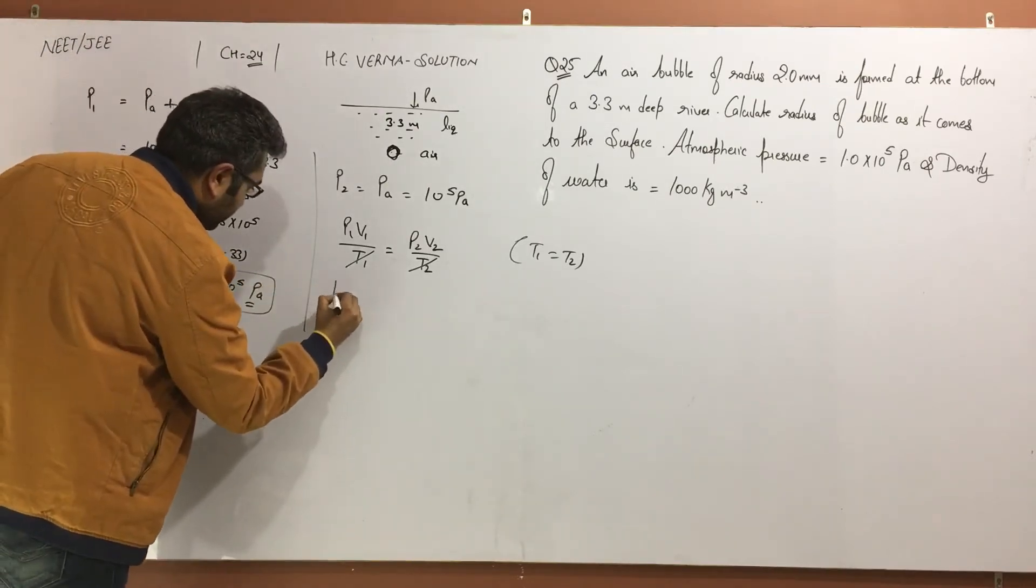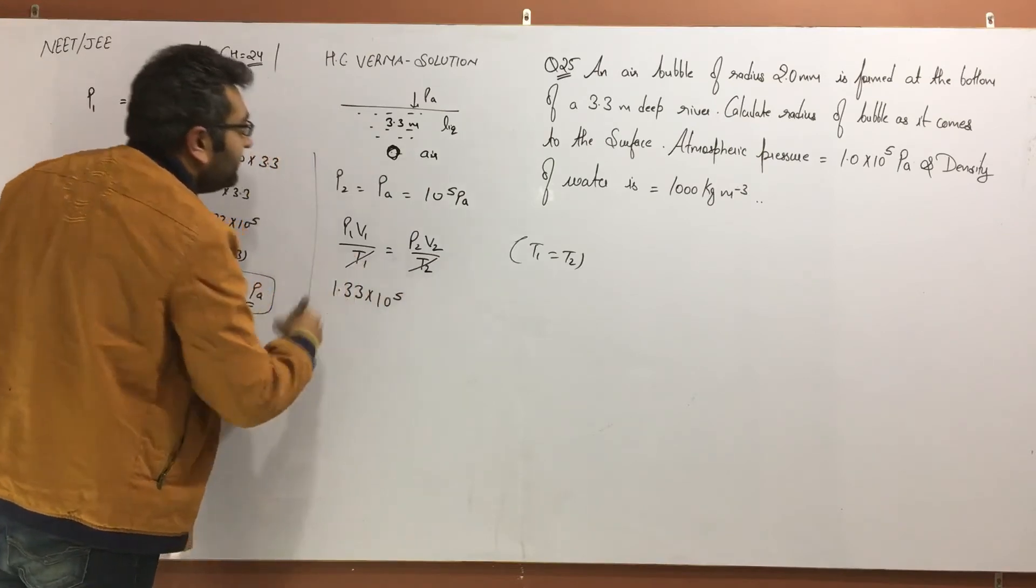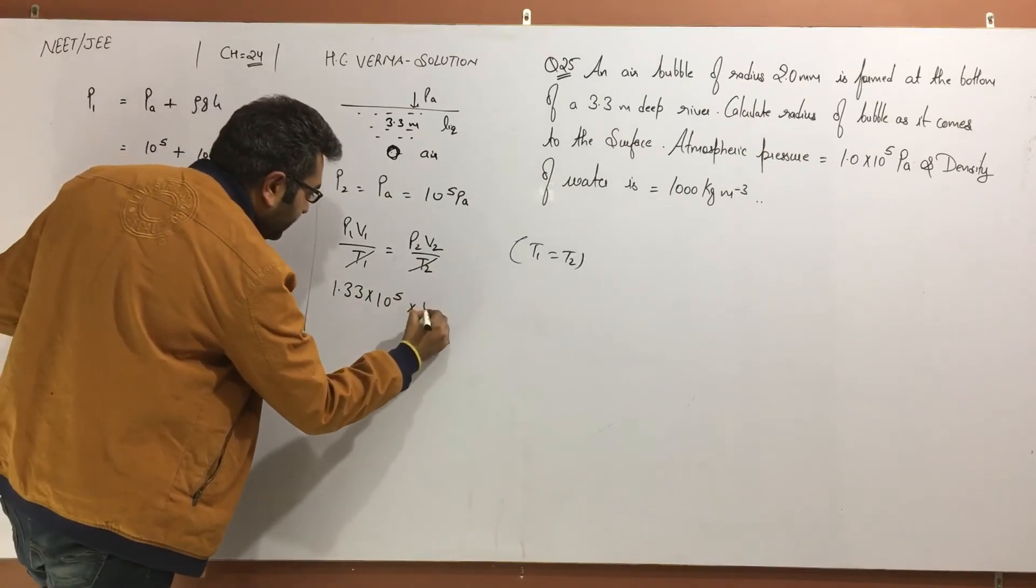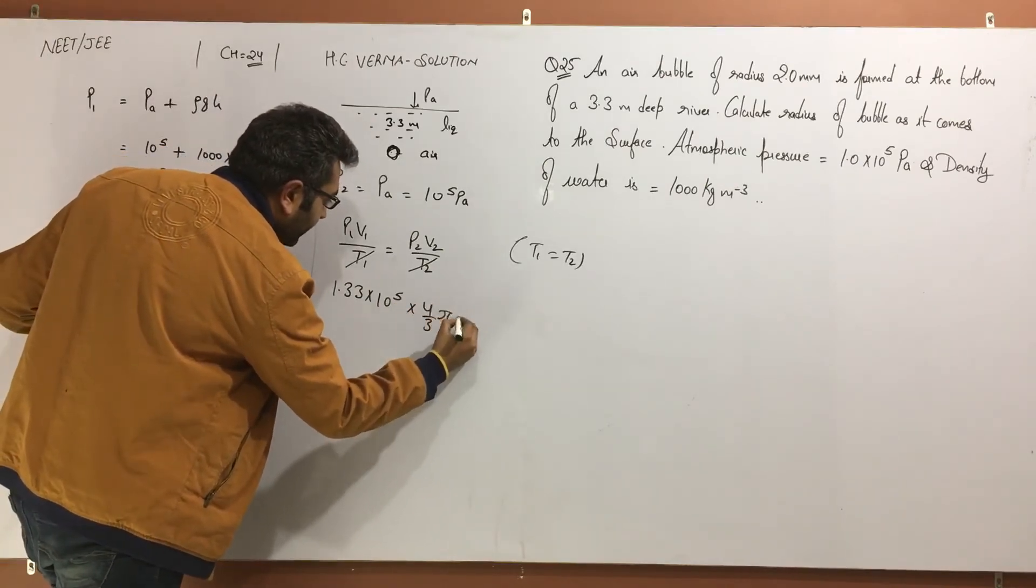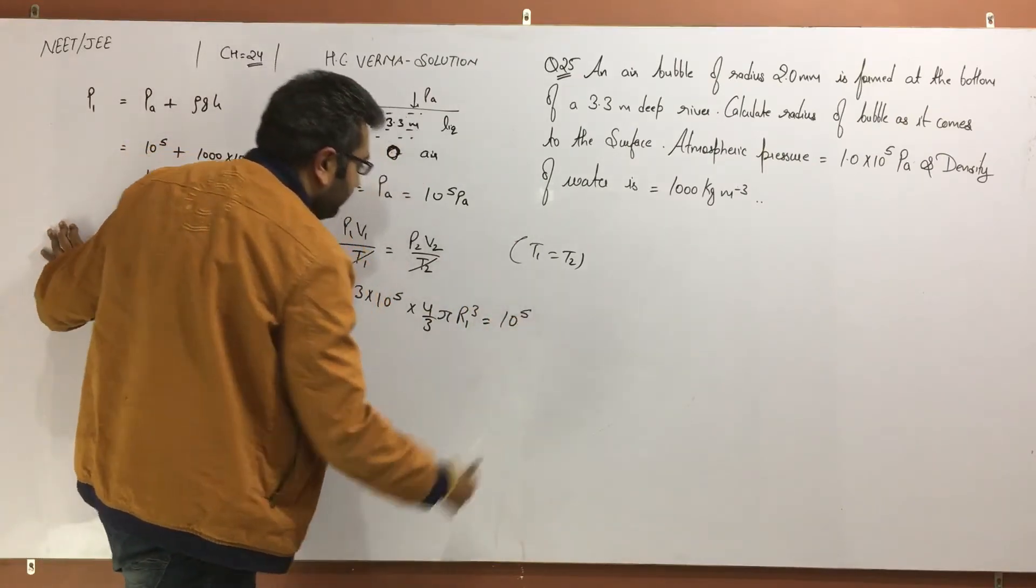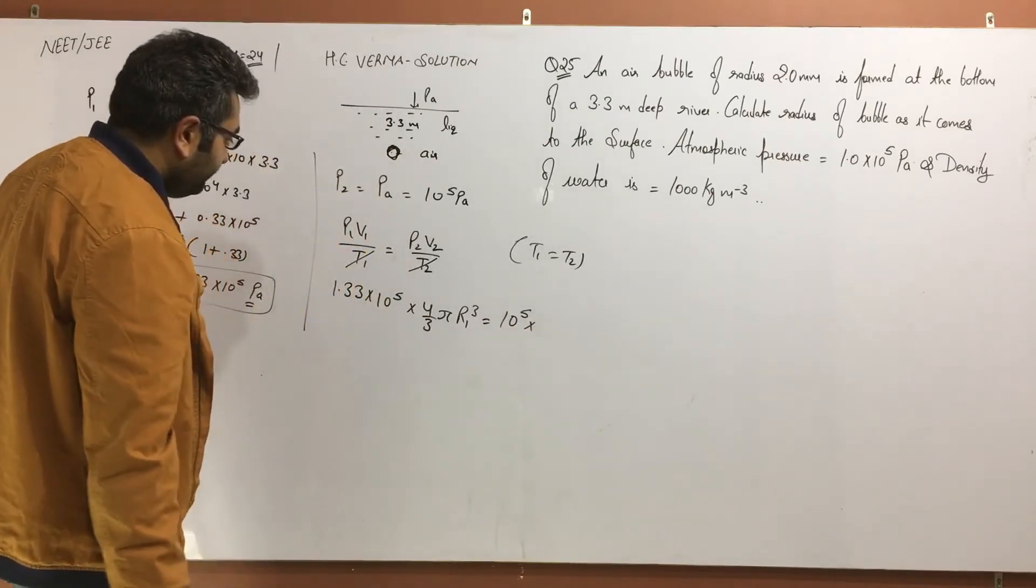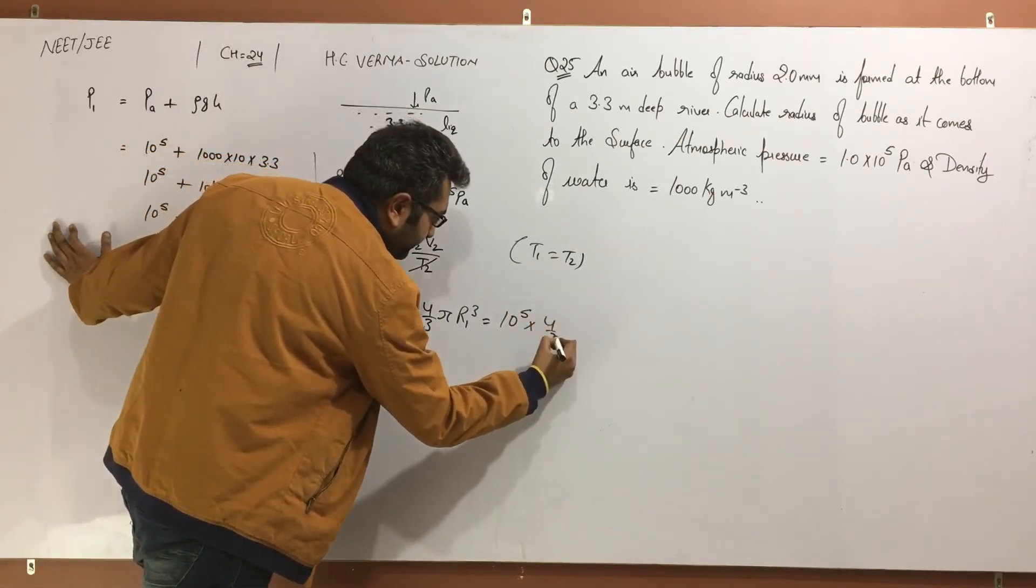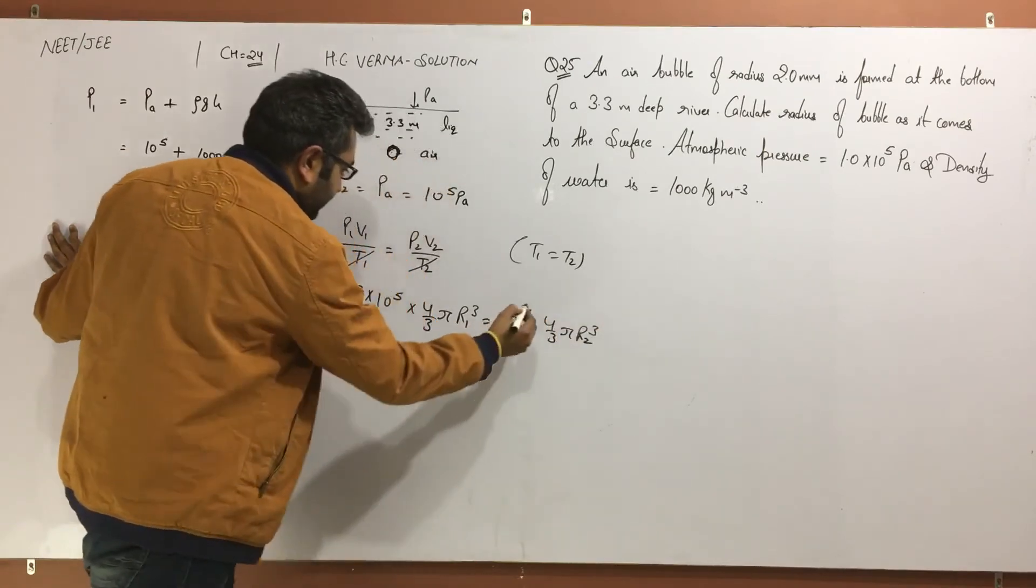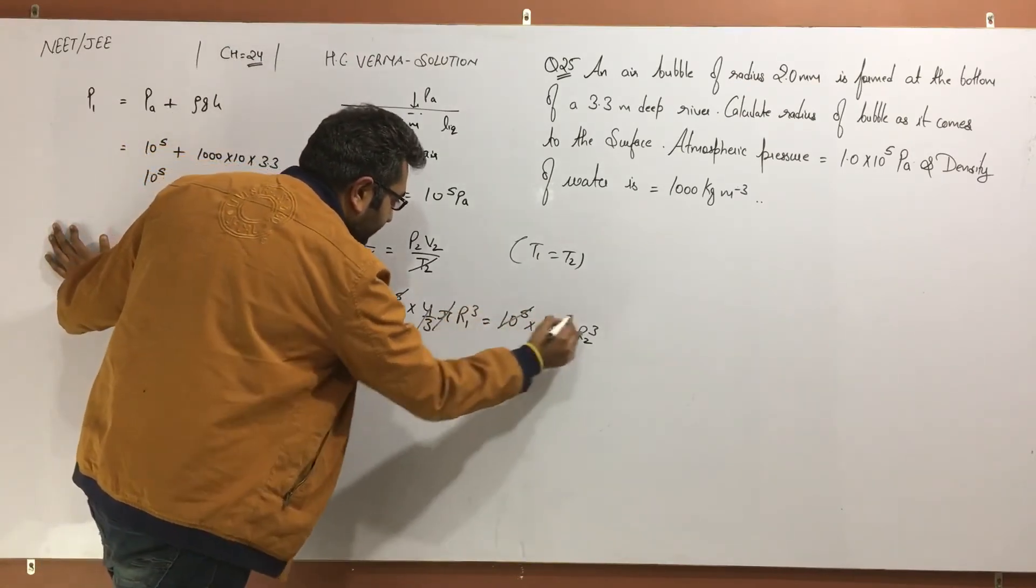P1 is how much I have? 1.33 × 10^5. The bubble is spherical shape, so spherical shape volume is 4/3 π R1³ = P2 which is just 10^5 times 4/3 π R2³. R2 we have to find. 10^5 cancels with 10^5, 4/3 cancels with 4/3, π cancels with π.